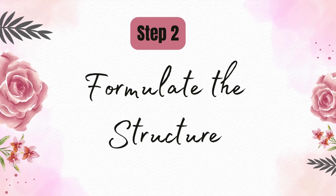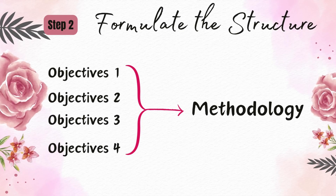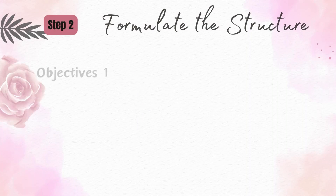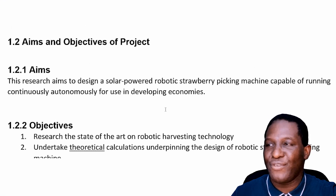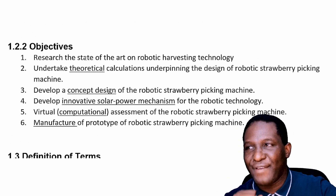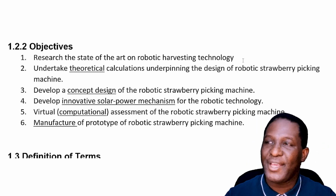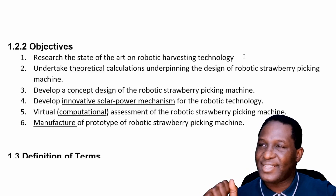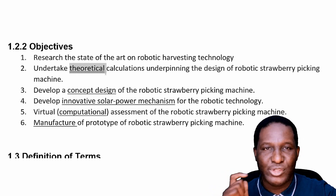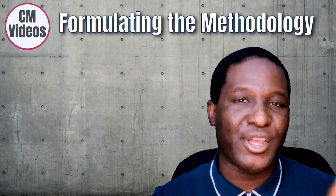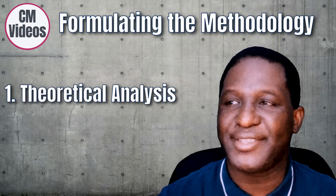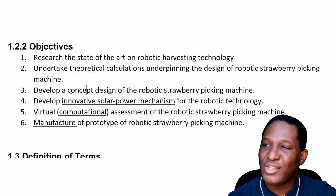The second step is formulating the actual research methodology. Beyond reading widely, you need to narrow down by going back to your aims and objectives, since you already have a specific plan. Looking at Brian's objectives: the first is to research the state of the art of robotic technology — that's part of the literature review. The key methodological task is undertaking theoretical calculations, so the first method to include is theoretical analysis.